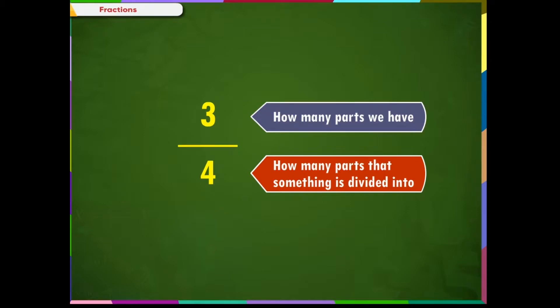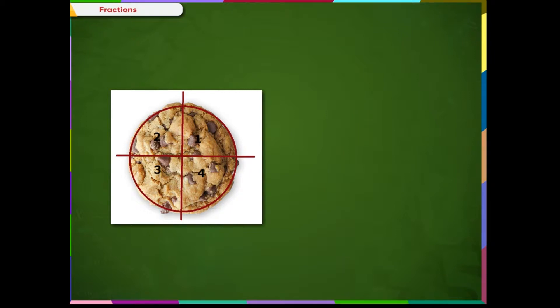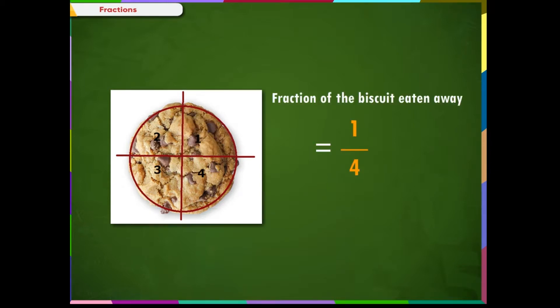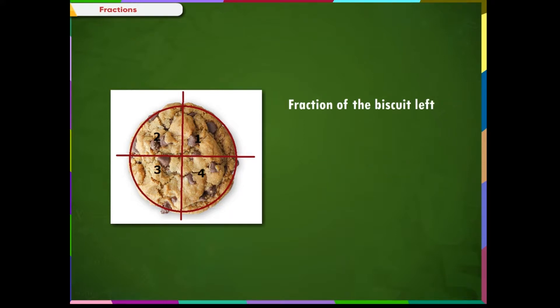Consider this biscuit. When we divide it into four equal parts and I eat away one part, we can say that I ate one by four of the whole biscuit. Here, the numerator is the part being eaten away and the denominator is the total number of parts, i.e. four. Can you say what fraction of the biscuit is left? Yes, you are right — three by four of the biscuit is left.